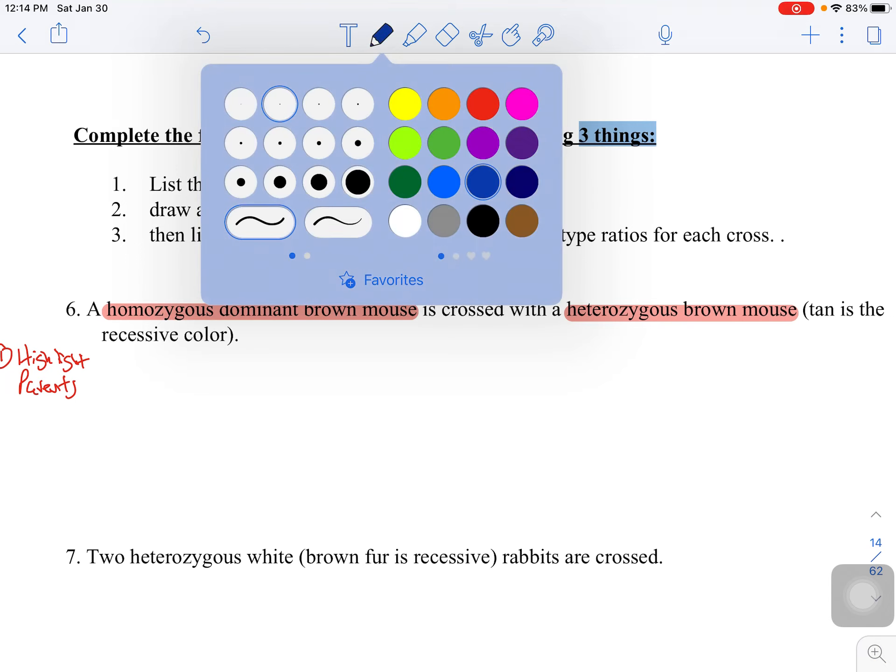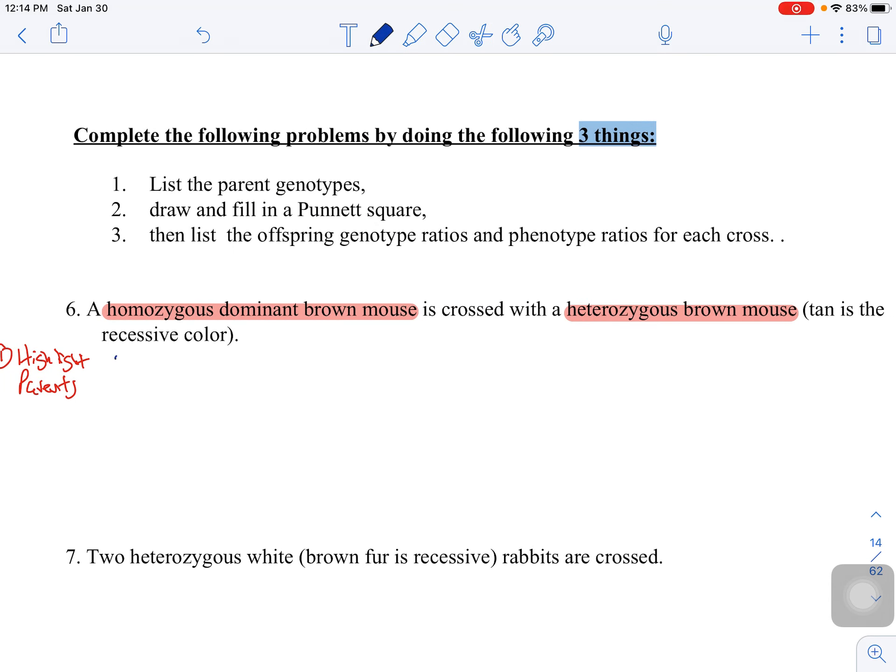Step two in the process is write down the dominant and the recessive traits. So if the dominant allele, as it says here, is brown, I just want to write down the dominant allele is brown, the recessive allele is tan. Making sure I understand what I'm working with really does help.